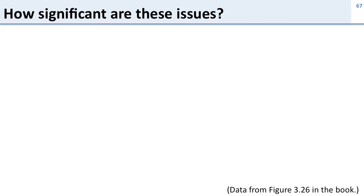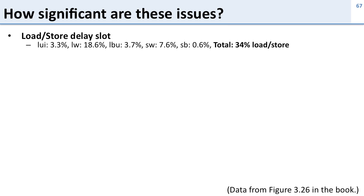Now let's take a look at how significant these issues are. The data comes from figure 3.26 in the book, from benchmarks that are typically run to see how fast processors are. Let's look at the impact of the load/store delay slot. If we look at what percentage of instructions are loads and stores, load word is 18.6%, store word is 7.6%, plus a few other load and store instructions, so in total 34% of our instructions are loads and stores.